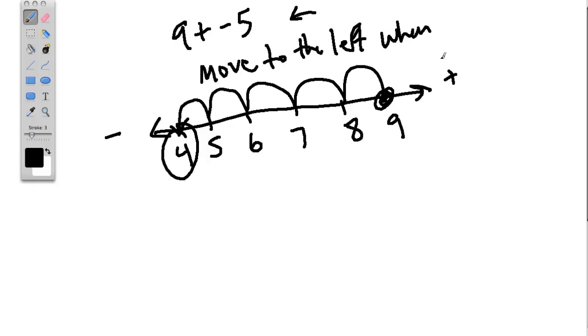So 9 plus negative 5 is 4 because we move to the left when we add a negative. This is really an important idea. Okay, so if we can accept that, that we're moving to the left when we're adding a negative, then we have this idea of subtracting a negative.